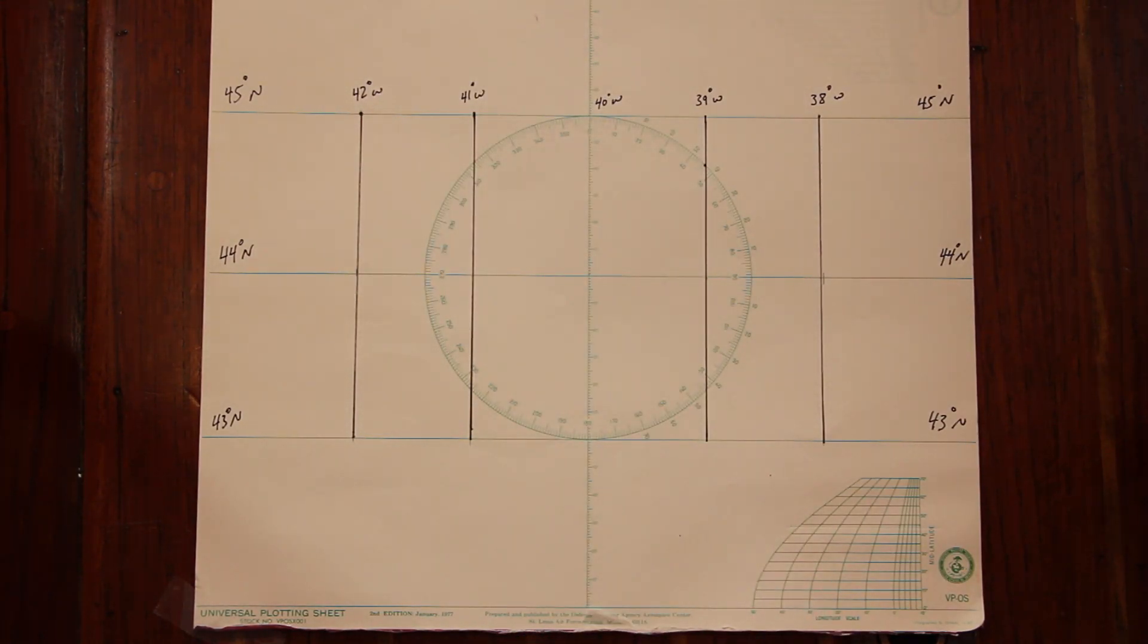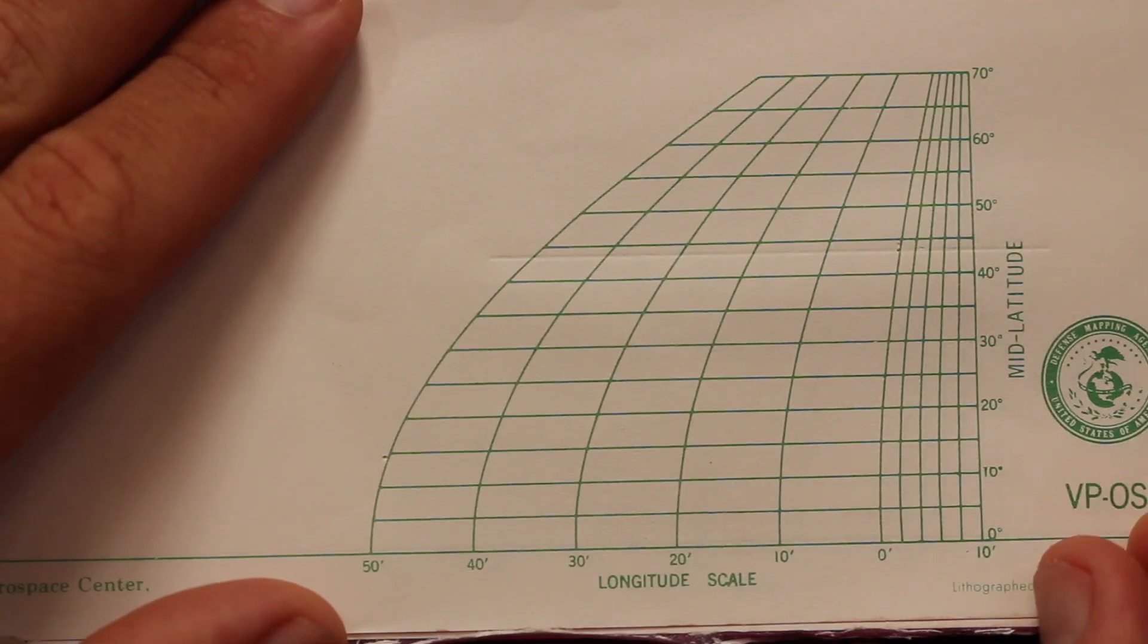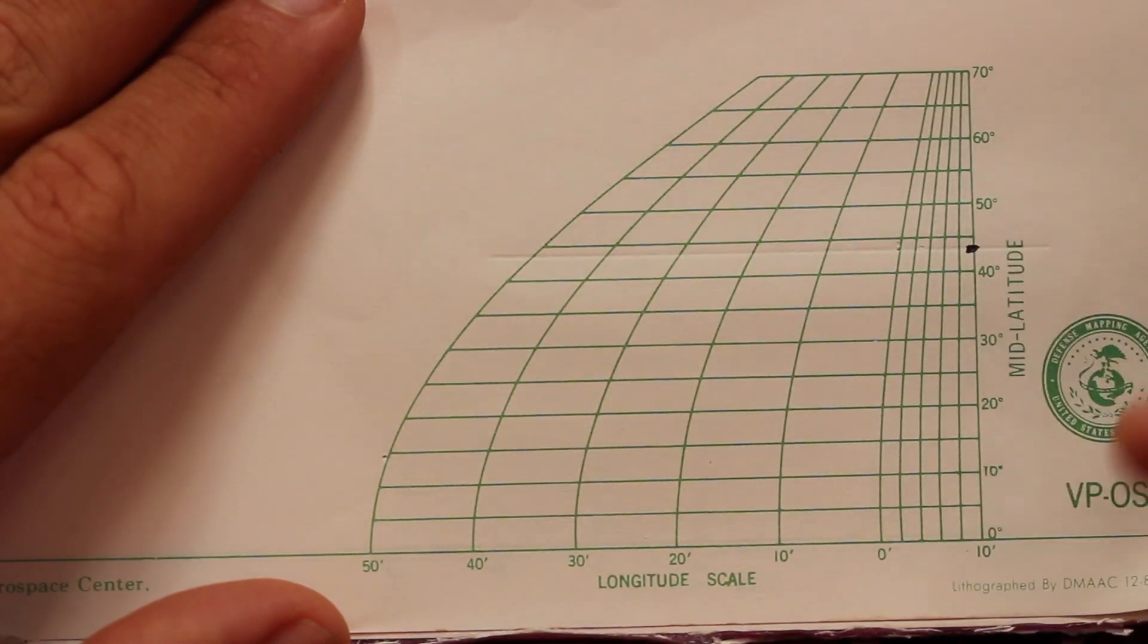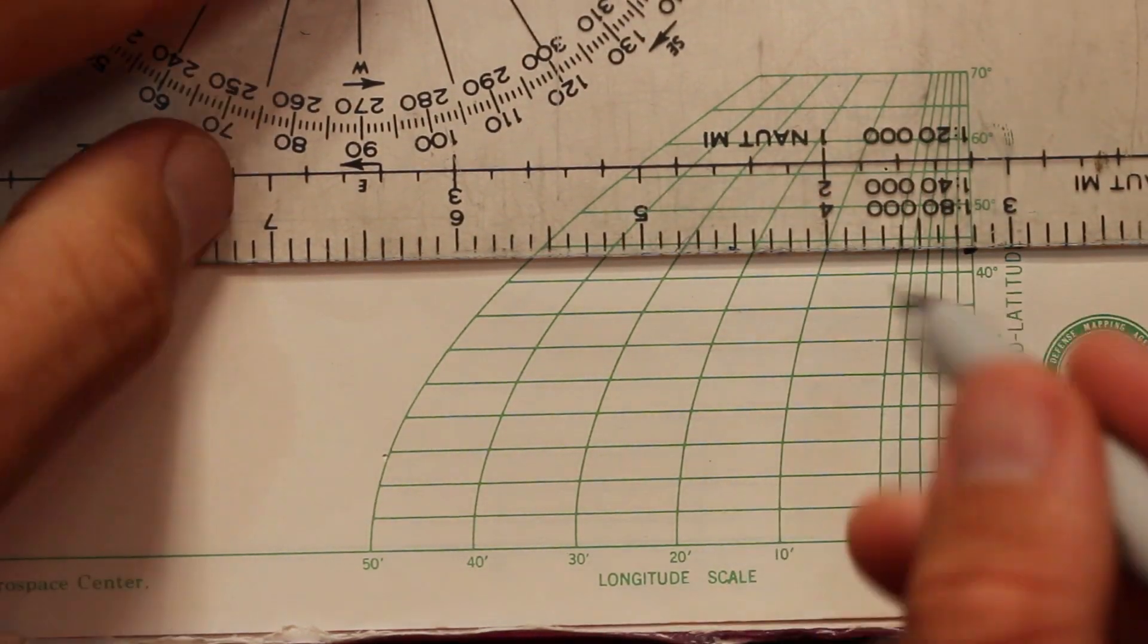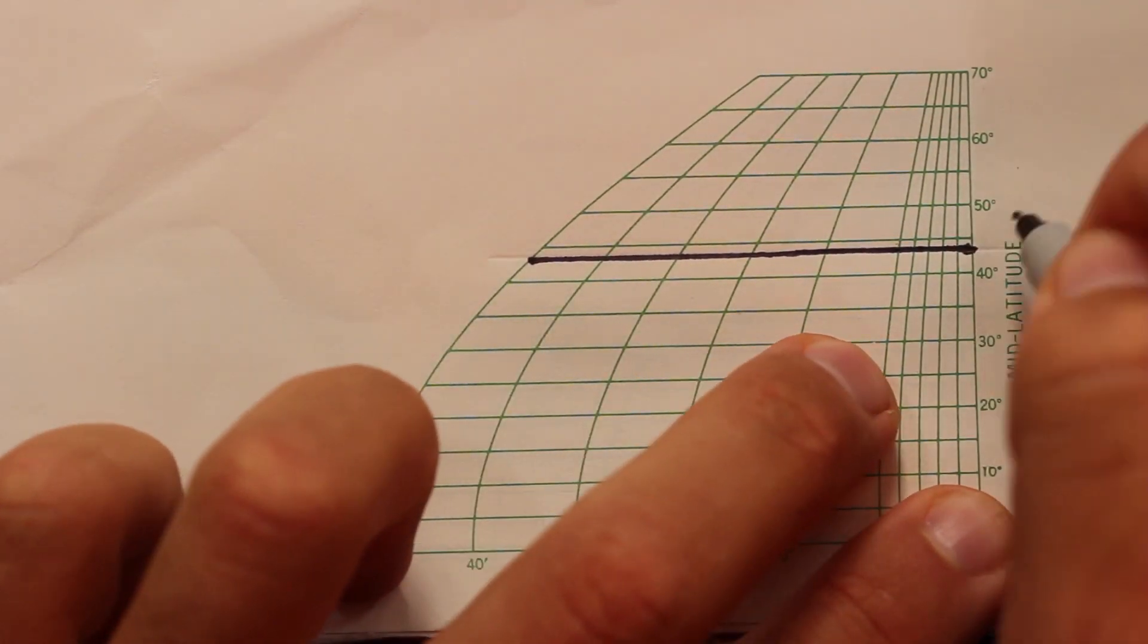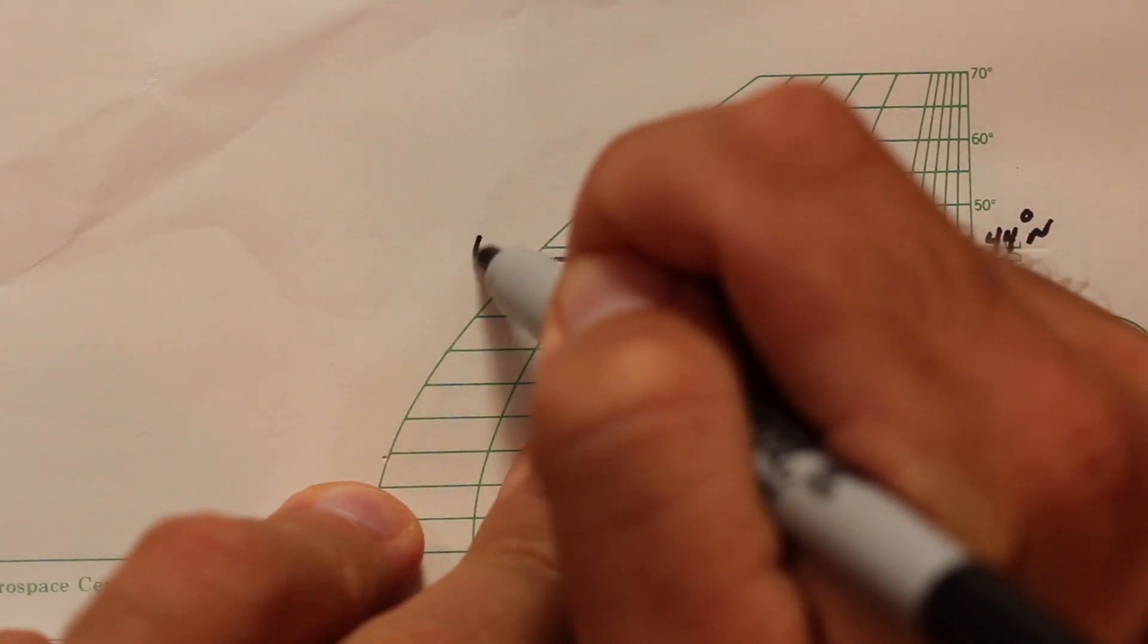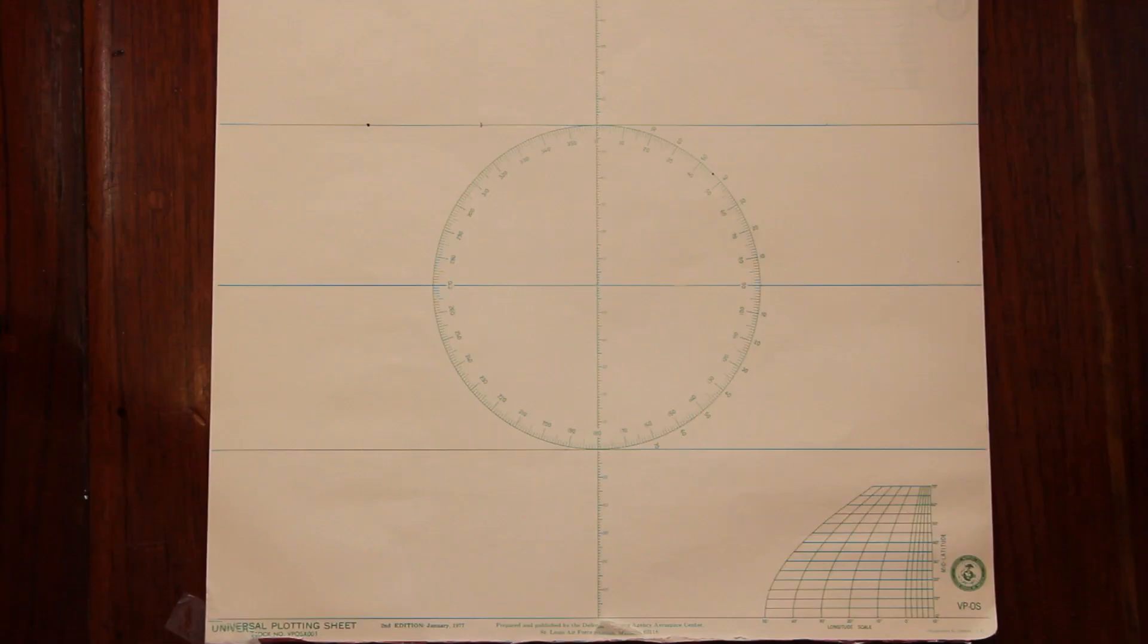In order to measure things on the UPS, we need to use the plotting scale at the bottom right-hand corner. As we zoom in on that, the first step is to again plot your mid-latitude. In this case, it's 44 degrees north. As you can see from the scale, the lines below the mid-latitude descend down to the longitude measurement scale. So 50, 40, 30, 20, and then 0 to 10 are the measurements.